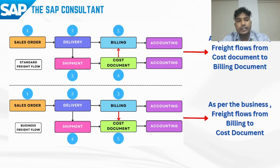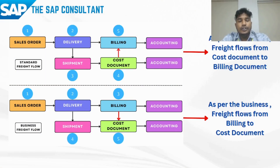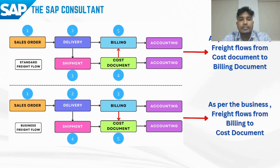As part of this session, let us try to find the right enhancement and implement an example for the shipment cost calculation process. Before finding the enhancement, let me show you one real-time example. On the slide, there is a standard flow given by SAP and there is a business expected flow.